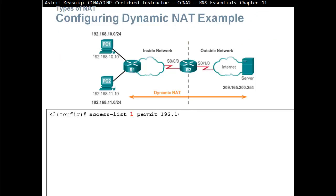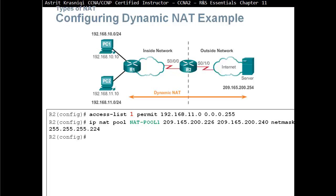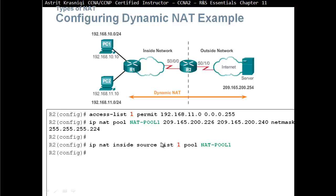To configure dynamic NAT, first we create an access list that permits the network we want to translate — for example, the network connected to PC2. Then we create a pool defining the public address range we have: IP NAT pool, give it a name, then the start and finish of the public addresses — for example, from .226 to .240. The netmask is 255.255.255.224. Then we bind the access list to the pool with the command IP NAT inside source list 1 pool NAT pool.